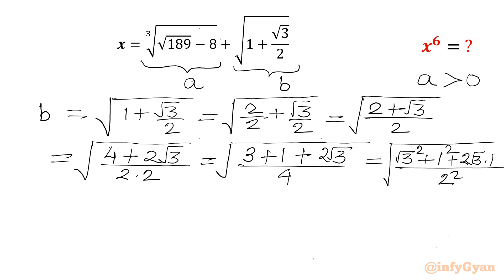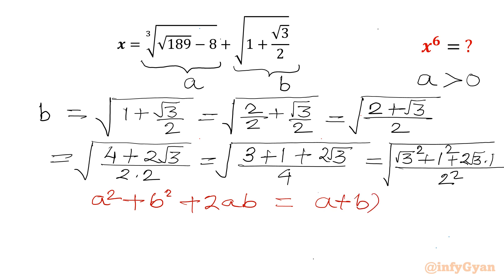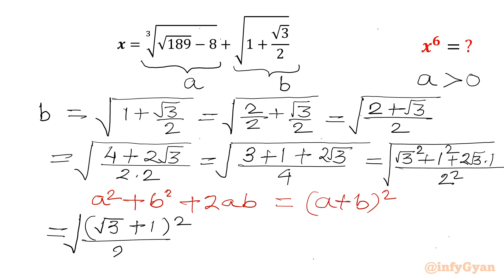Now can we write 3 as (root 3) squared, 1 as 1 squared, and then 2 times root 3 times 1, divided by 2 squared? Yes — this matches the identity a squared plus 2ab plus b squared. So the numerator is (root 3 plus 1) whole square and the denominator is 2 whole square.